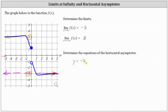Similarly, since the limit of f of x as x approaches negative infinity equals positive three, the line y equals three is a horizontal asymptote. If we sketch the line y equals three, we can see the graph approaches this horizontal line as it moves to the left, which is why this is a horizontal asymptote. The equation of the second horizontal asymptote is y equals three.